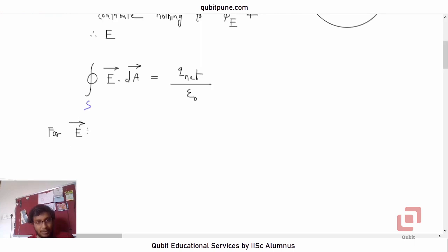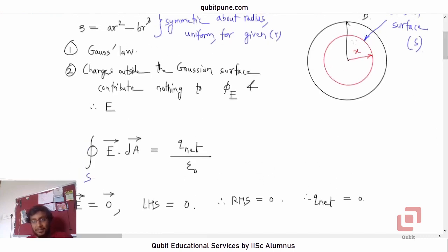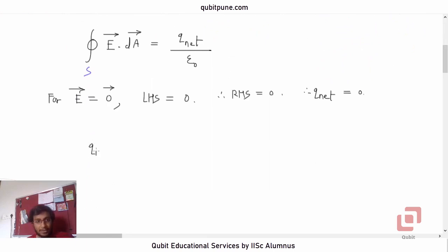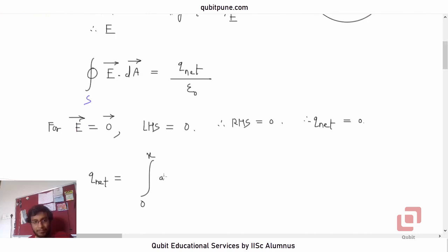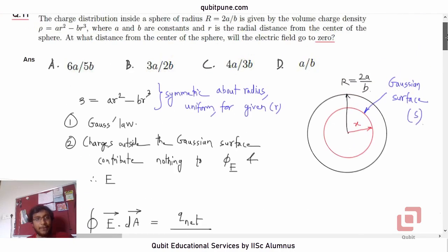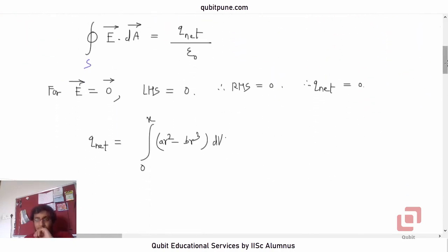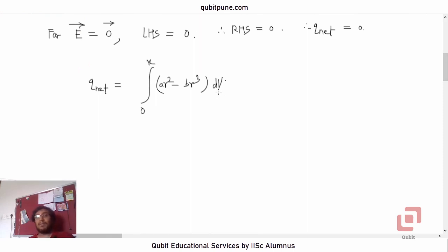For electric field to be a null vector, LHS must be equal to zero. Therefore, RHS must be zero. ε₀ is a finite constant. Therefore, q_net enclosed should also be zero. Now, how are we going to find the net charge q inside the sphere? To do that, let us use the formula definite integral.